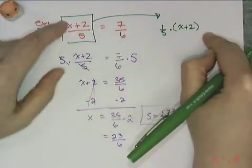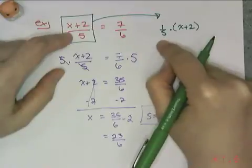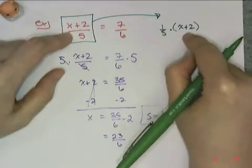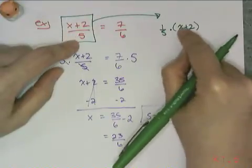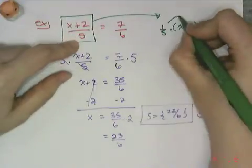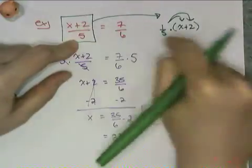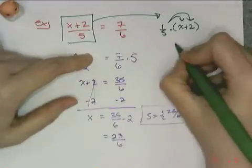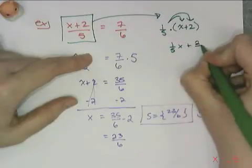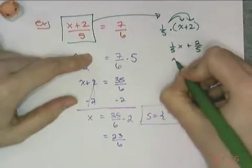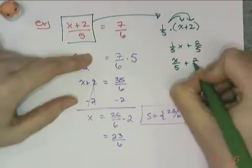So really what I have is 1/5 times the quantity (x+2). So if you see an equation like this, you can always rewrite it as some fraction, which in this case is 1/5, times the quantity x+2, which is the numerator. Now when I distribute this, which is what you would do if I had written the equation like this in the beginning, you would get (1/5)x + 2/5, which is the same thing as x/5 + 2/5.